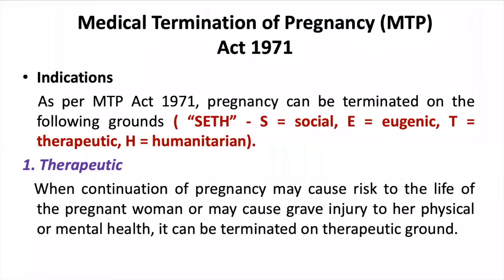Let us see the indications first. MTP Act 1971 — pregnancy can be terminated on the following grounds, that is said as SETH: S for Social, E for Eugenic, T for Therapeutic, and H for Humanitarian.